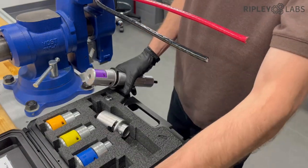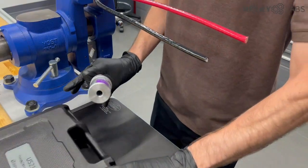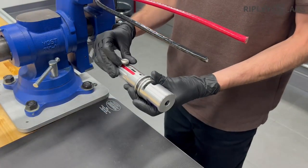Say goodbye to bulky bushing kits or unsafe stripping with knives and a torch. Simply choose the color-coded bushing that fits your cable and load it into the tool.